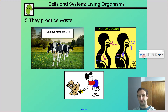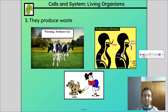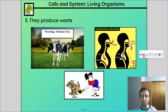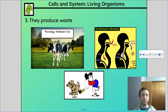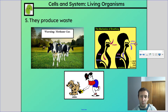All living things produce waste. The cows there produce methane gas — burping cows making methane, which contributes to climate change. There's also feces. And carbon dioxide is waste for us as well, which we're breathing out all the time. So we actually produce a lot of different varieties of waste.